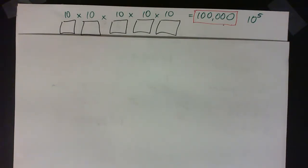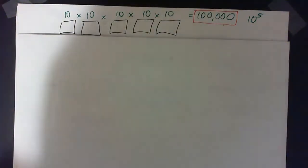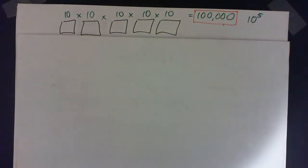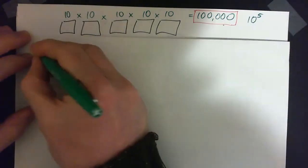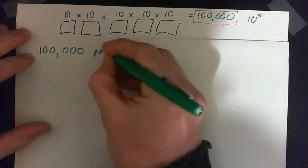So suppose you're determined to open the lock by trial and error. You try a new combination every second. What is the longest amount of time that it could take to find the correct combination? We established there are 100,000 possible combinations for this lock.